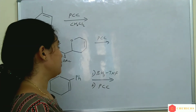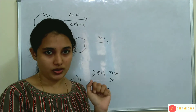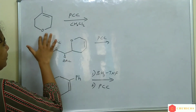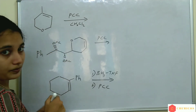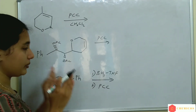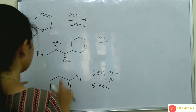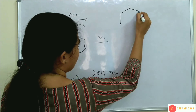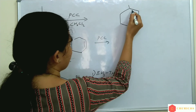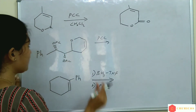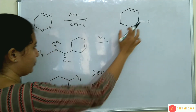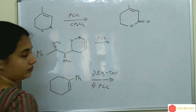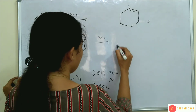Another type of PCC reaction is that an active methylene group is oxidized. What is an active methylene group? It is a carbon which has acidic protons. Here the active methylene group is this carbon, and the active methylene group is oxidized to a ketone. So in this example, where is the active methylene group? Here — and it is oxidized to a ketone.